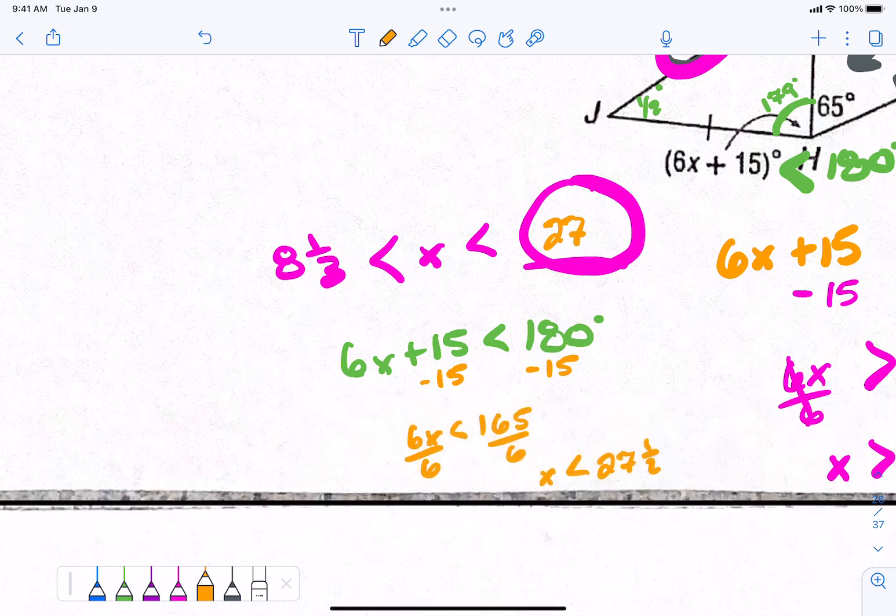So, we can't have x be 100 or x be whatever it wants to be. It can't be any bigger than 27 and a half. Otherwise, it will make that angle more than 180. Does that make sense? So, not only do we have a lower limit, but we have an upper limit as well. Did that make sense? No. Did that make sense? It is kind of difficult. Icky. Okay?